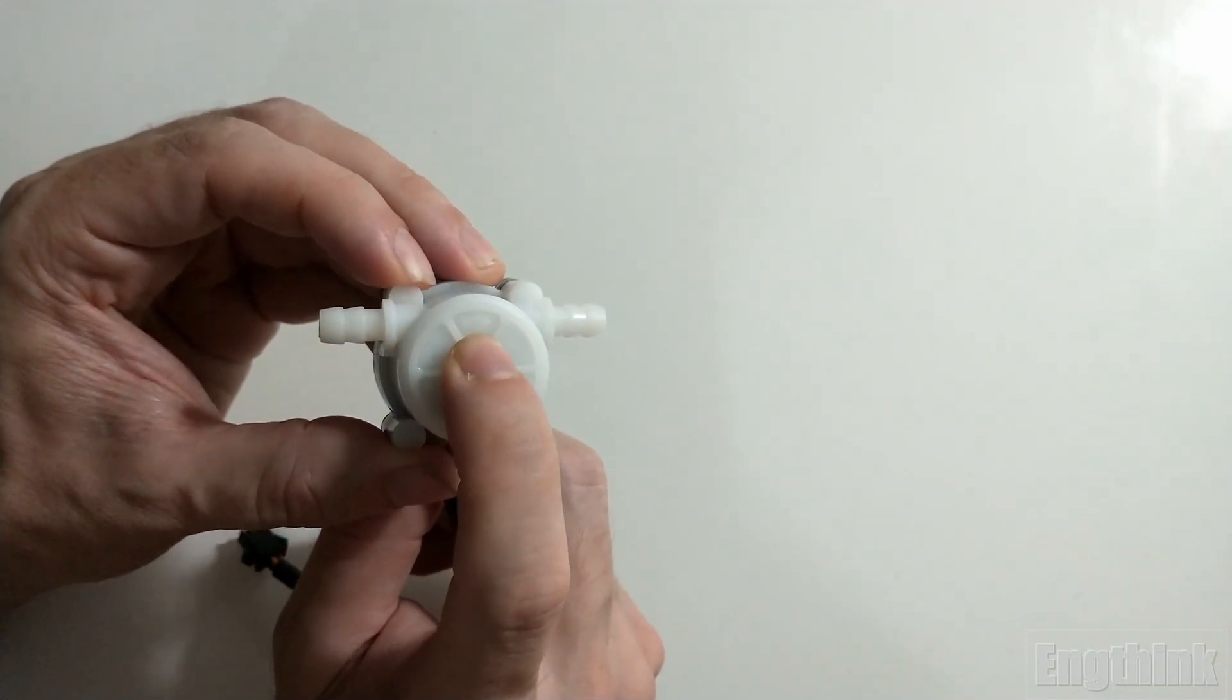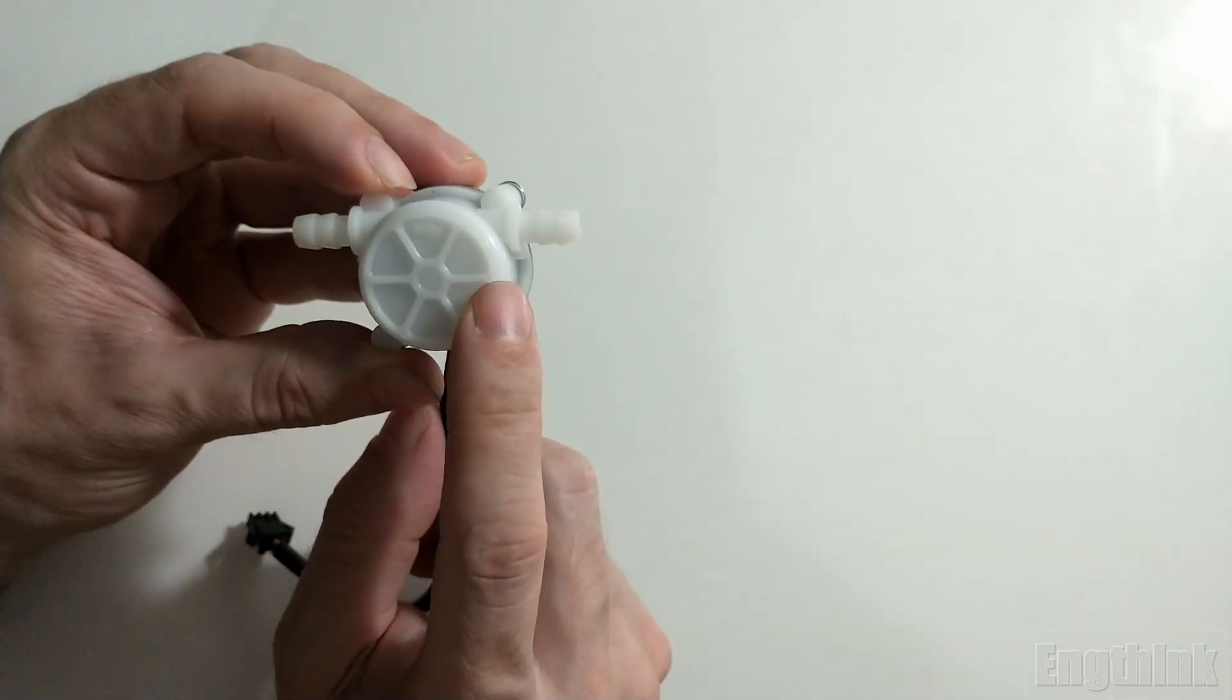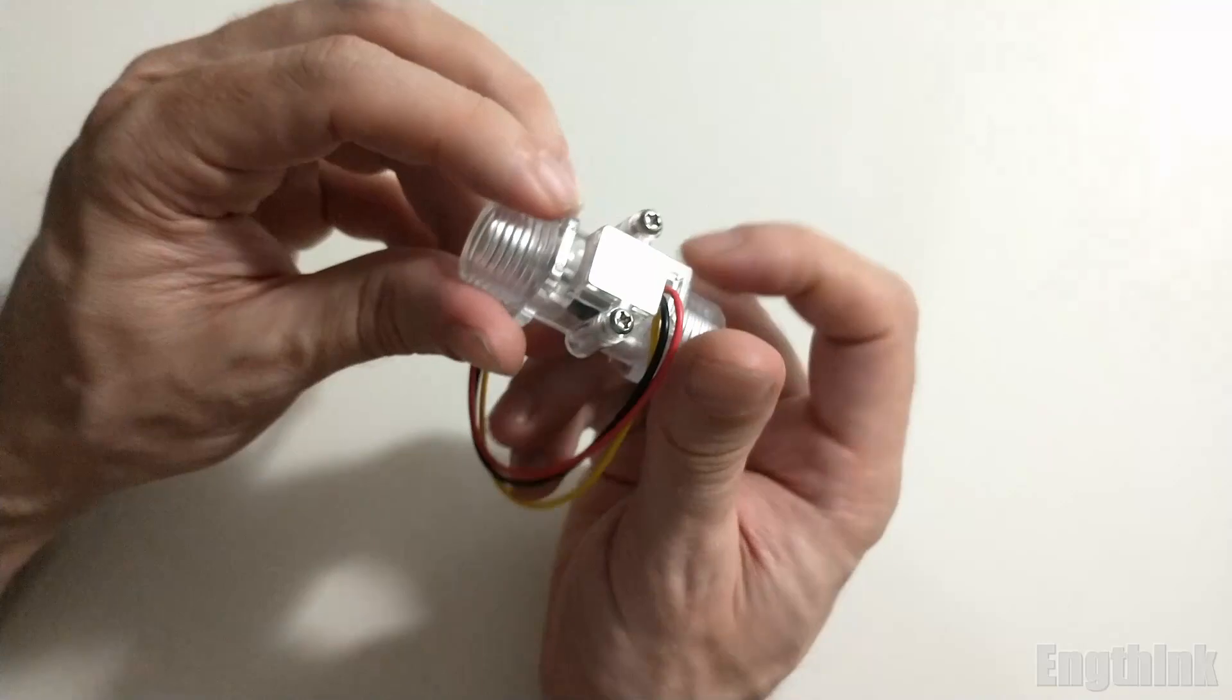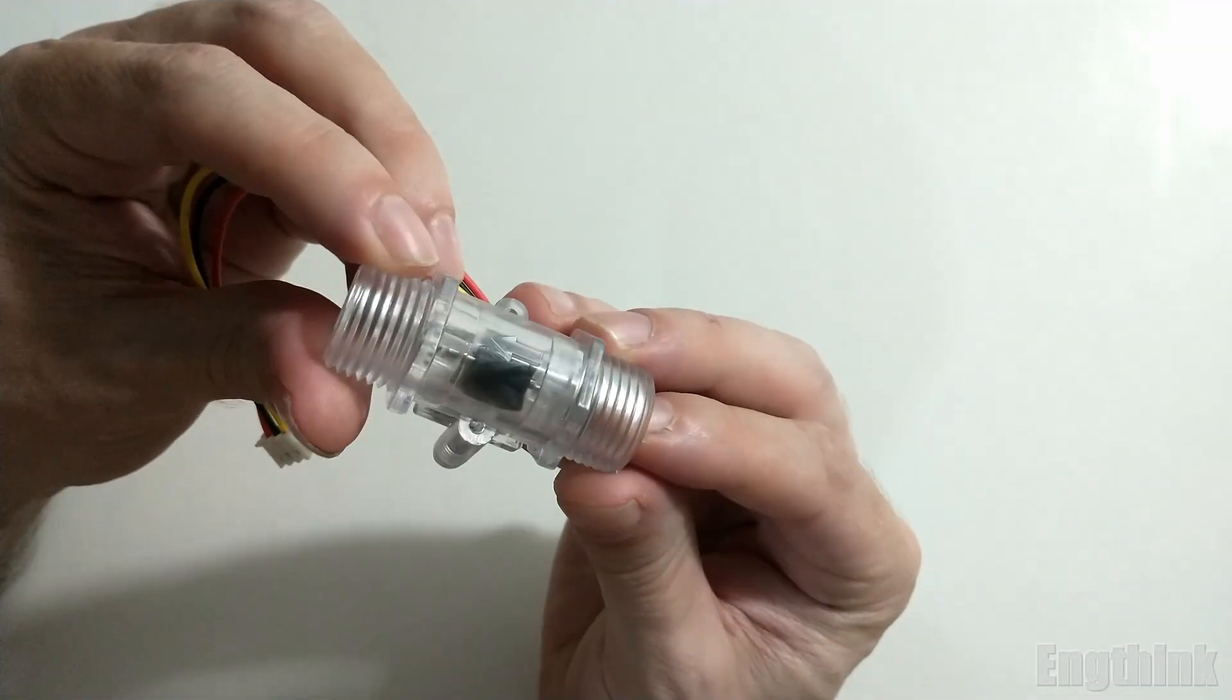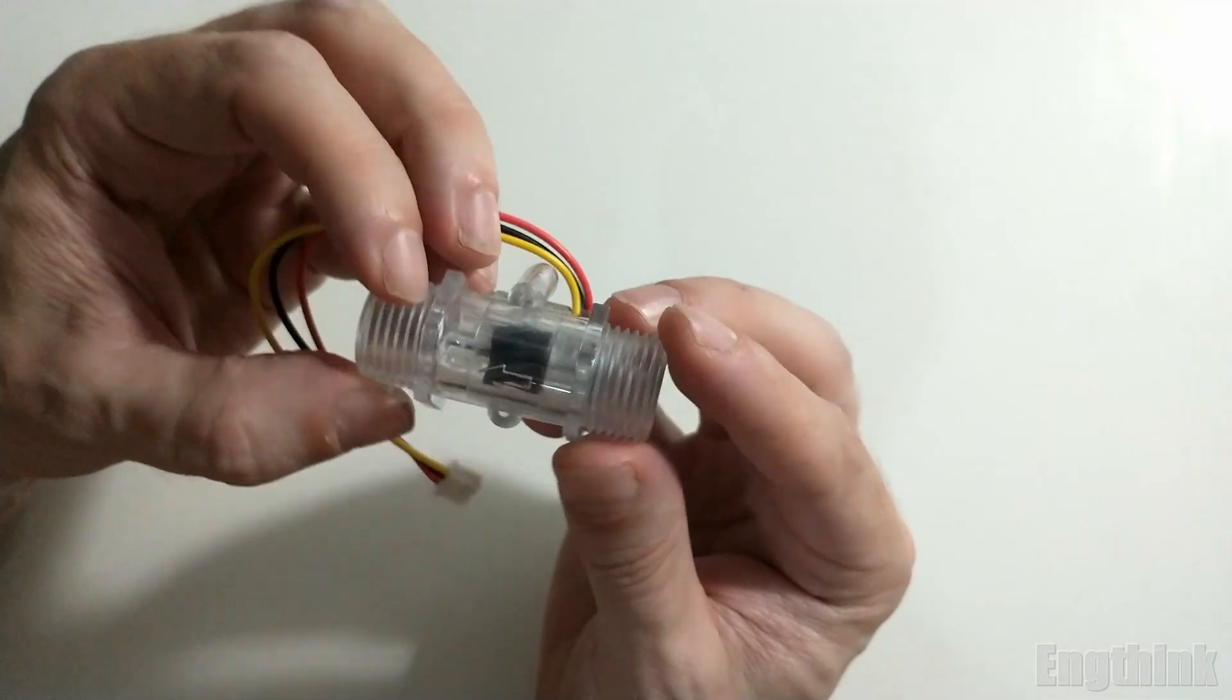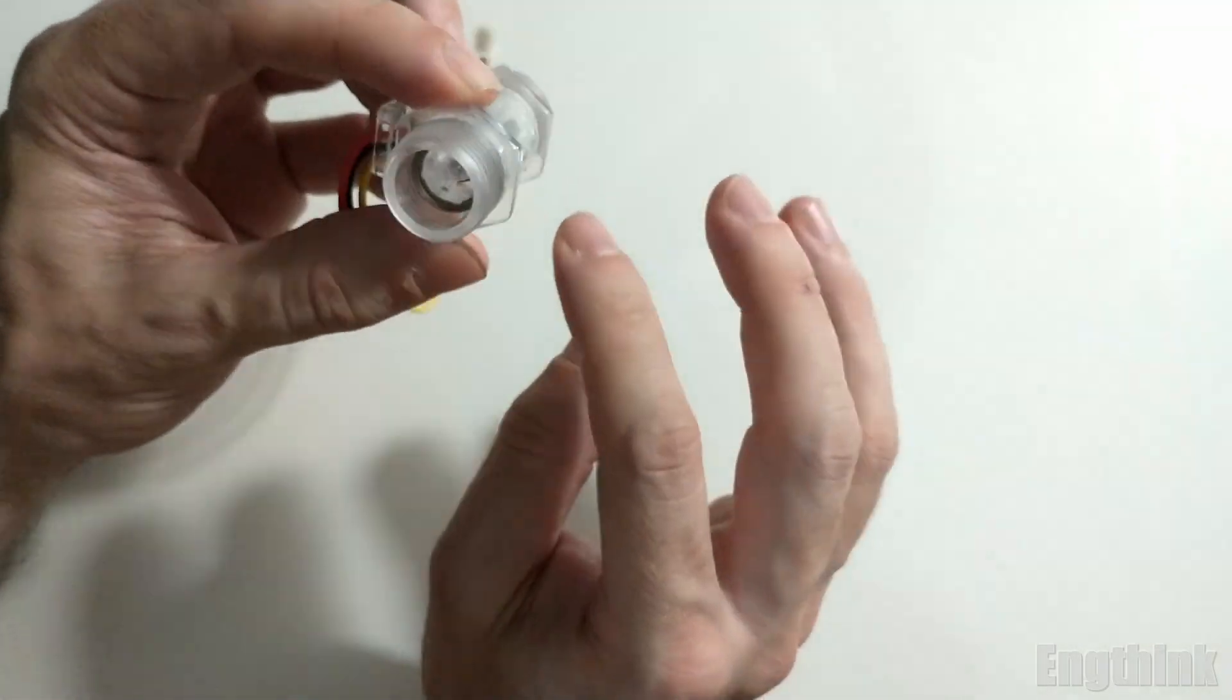Usually there is an indication like on this model here, where we have on the bottom of the sensor an arrow that indicates the right direction of the flow. For this sensor, when you look face down, you can see that the flow needs to go from left to right. Otherwise, when you look face up, the direction is right to left. Now we have another sort of flow sensor, this one is a transparent one.